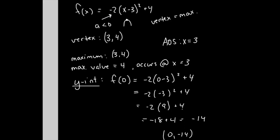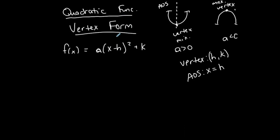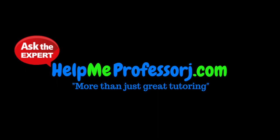So this is called vertex form, our book calls it standard form, I don't know why, but this is the vertex form of a quadratic function, and then I'm going to do another form of it in a second.